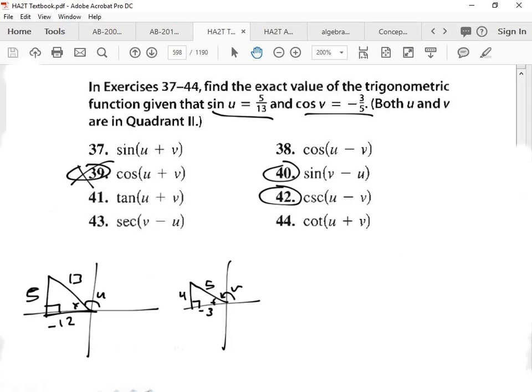Okay, so number 40 says sine of v minus u. And the formula for that is sine cosine. So I'm going to go sine of v, cosine of u, and then that's a v. That kind of looks like an r. Oops, sorry. That's kind of bugging me. Alright, let's just rewrite it over here. Okay, so we have sine of v, and then cosine of u minus sine of u, cosine of v.